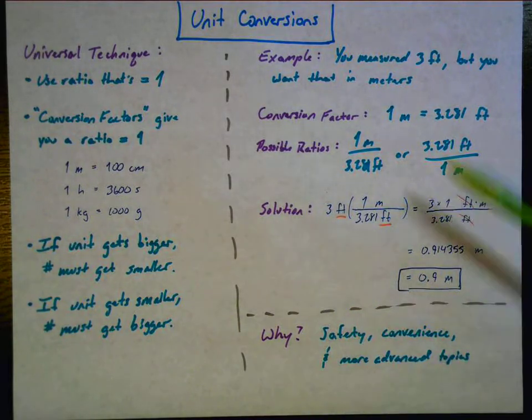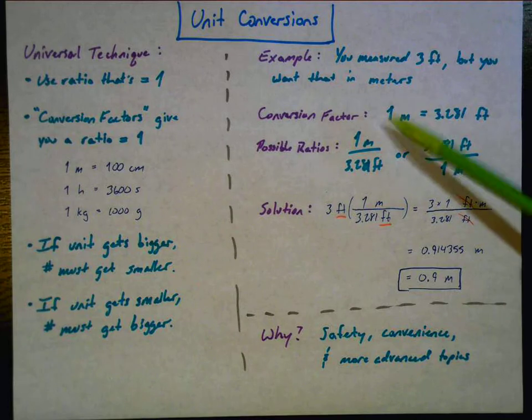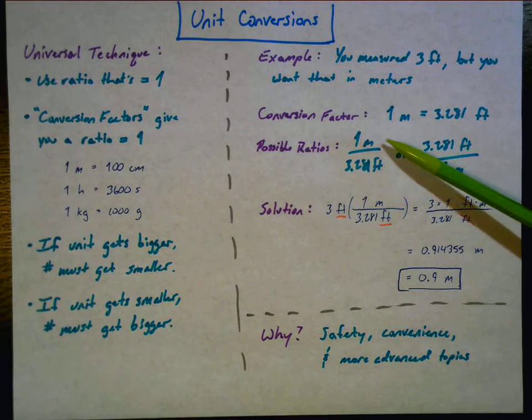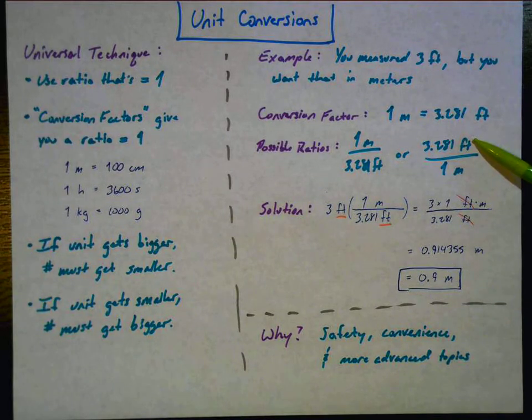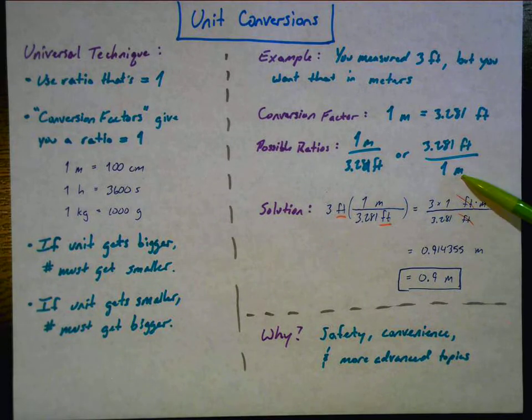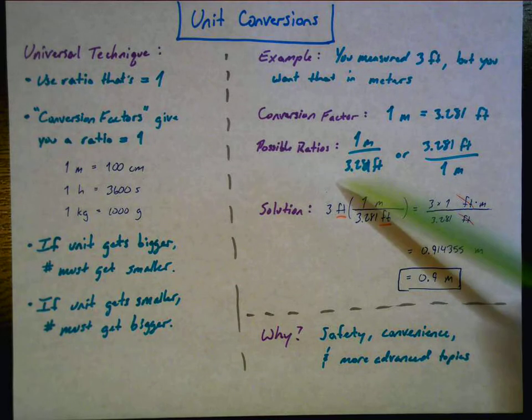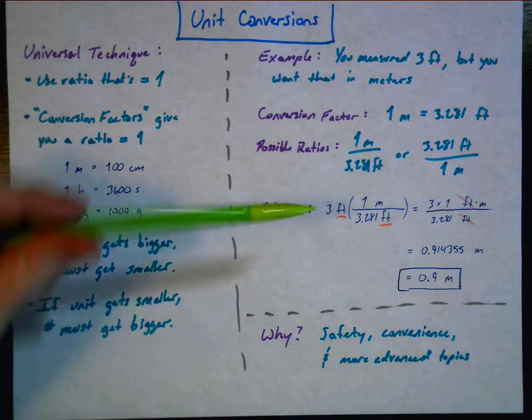So possible ratios. When we write this conversion factor as a ratio, it basically looks like a fraction. And we can put one meter on top and the 3.281 feet on the bottom, or we can put the measurement of feet on top, 3.281 feet on top, and the one meter on the bottom.